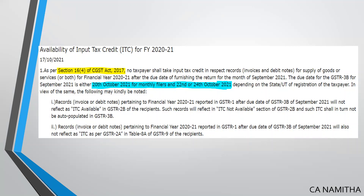Any rectification in respect of ITC for the financial year 2021, or if any ITC is to be claimed now pertaining to financial year 2021 which was not claimed earlier, can now be taken before 20th October in case of monthly filers, and 22nd or 24th October in case of quarterly filers — which is the due date for filing GSTR 3B for the month of September or the quarter ending September 2021.